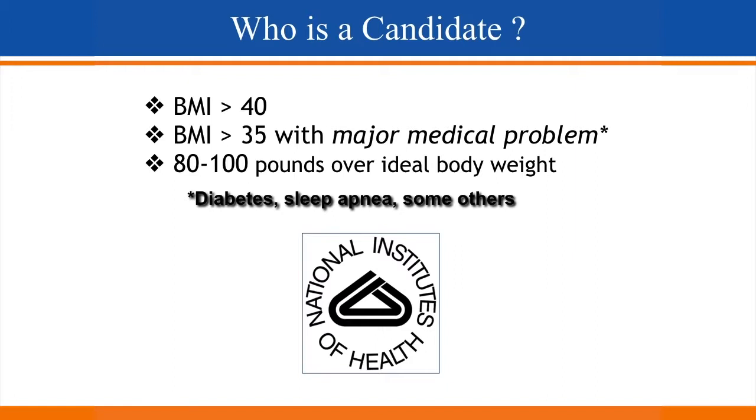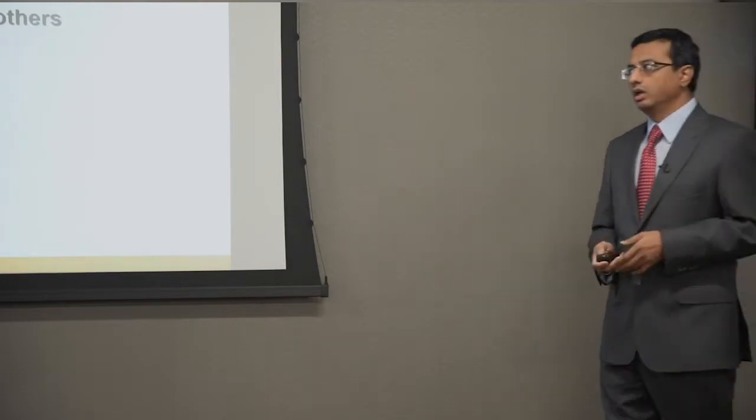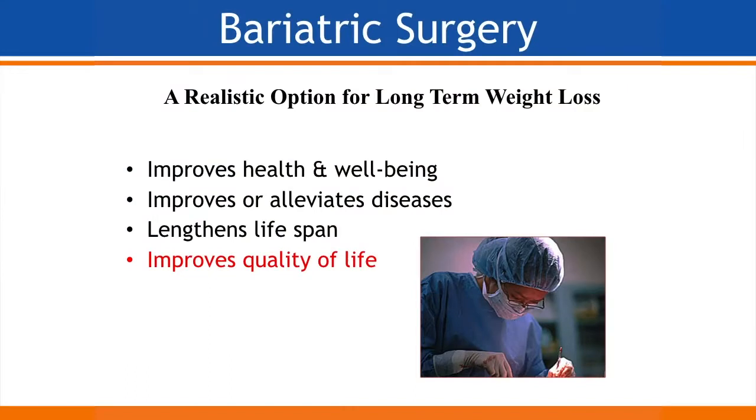So who is a candidate for surgery? Anybody with a BMI of 40 or higher is a candidate. Or, if you have other medical problems related to obesity — as we've seen from the earlier list — then a BMI of 35 or higher makes you a candidate. That's roughly 80 to 100 extra pounds. It's a realistic option for long-lasting weight loss — it improves your well-being, improves obesity-related medical problems, and actually increases lifespan. People live longer once they lose weight, and for many it improves quality of life.